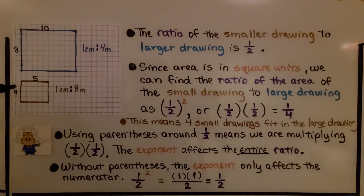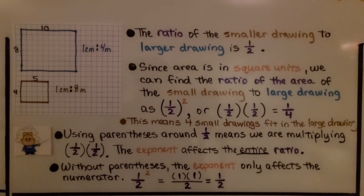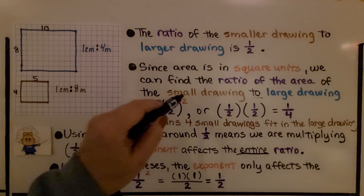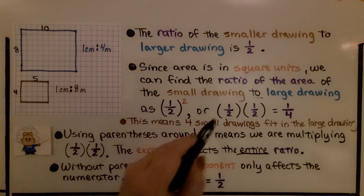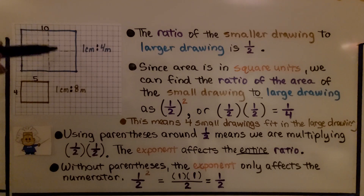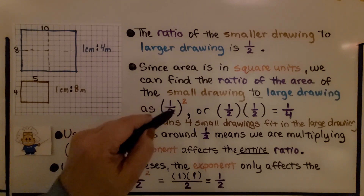The ratio of the smaller drawing to the larger drawing is one-half: four is half of eight, five is half of ten. Since area is in square units, we find the ratio of the area of the small drawing to the large drawing as one-half squared, or one-half times one-half, which equals one-fourth. This means four small drawings fit into the larger drawing.